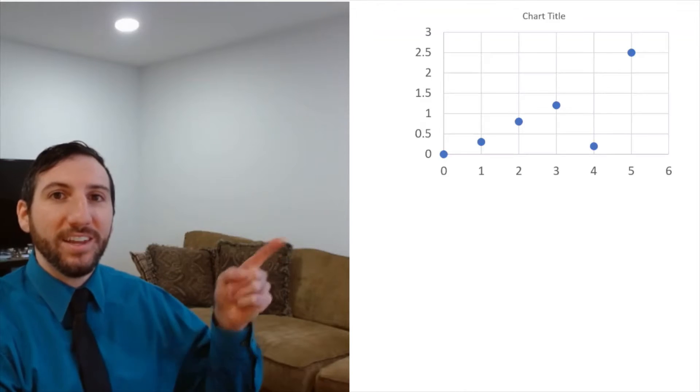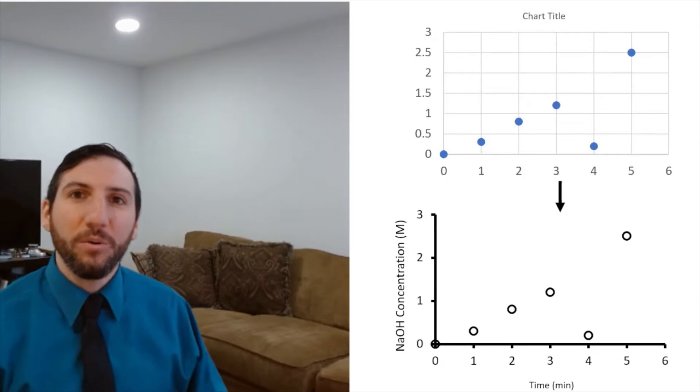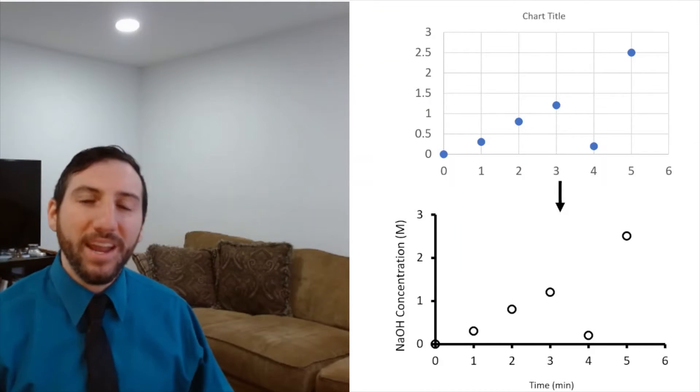Hello everyone and welcome back to another episode with Dr. B the Chem-e. In one of my previous videos we talked about things you should do to make a visually appealing figure, especially when you get the default settings of Excel. In today's video we're going to go over how to make those features appear in your Excel figure so that you have a good-looking figure. We're going to be converting a figure that looks like this into a figure that looks like this, all in Excel. Let's head on over to Excel and get started.